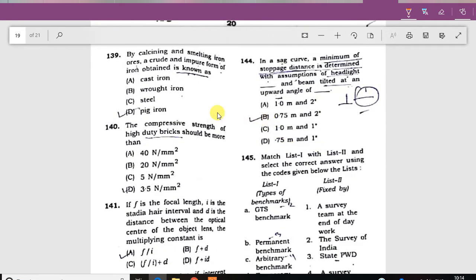By calcining and smelting the iron ores, the crude and impure form of iron obtained is known as pig iron. The compressive strength of high duty bricks should be more than 40 N per mm square.